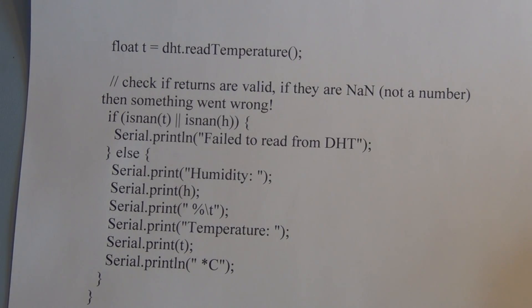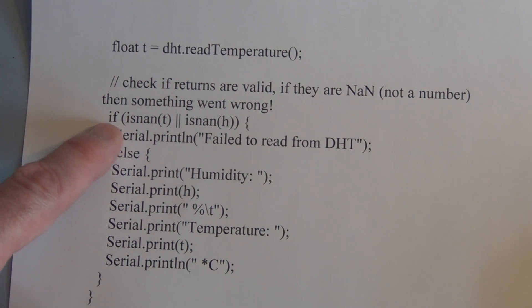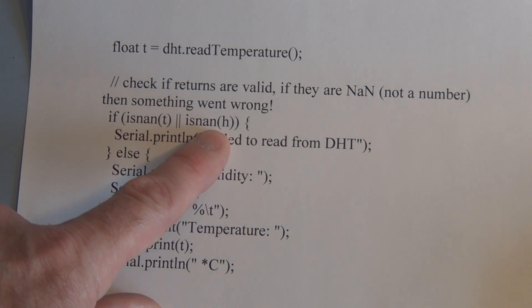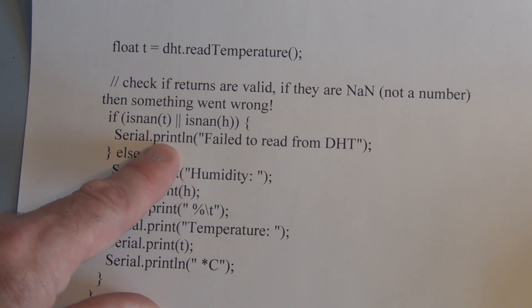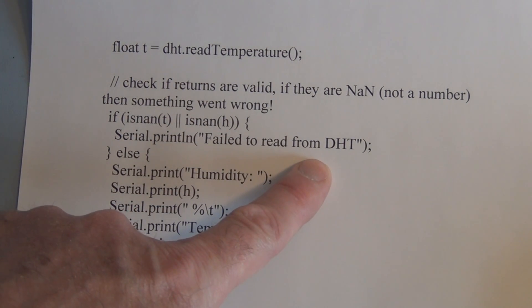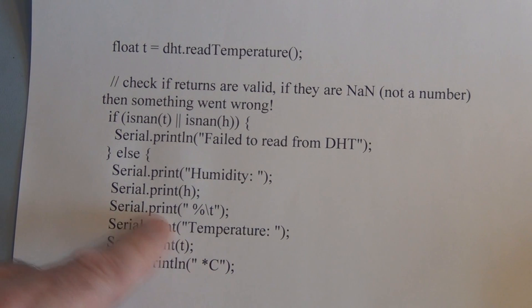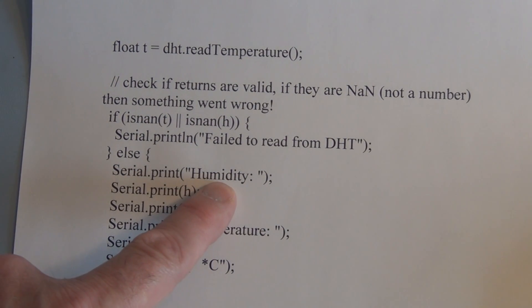So I guess you can get false readings with this temperature and humidity sensor. So we have a line of code in here that checks to see whether the temperature measurement and the humidity measurement are valid. If they are not a valid number, it will print out failed to read from DHT. If it is a valid number, it goes ahead and prints.